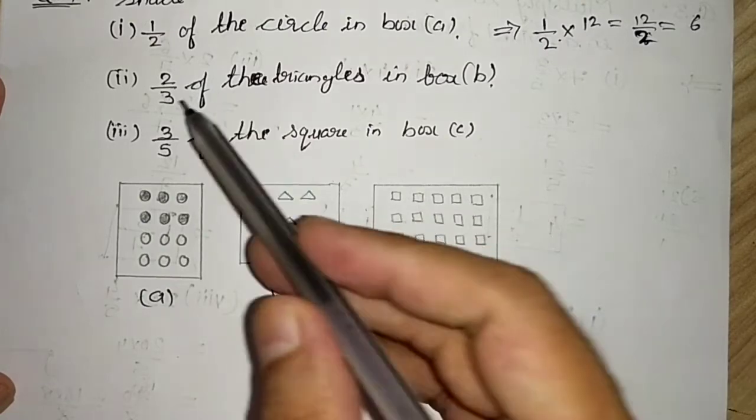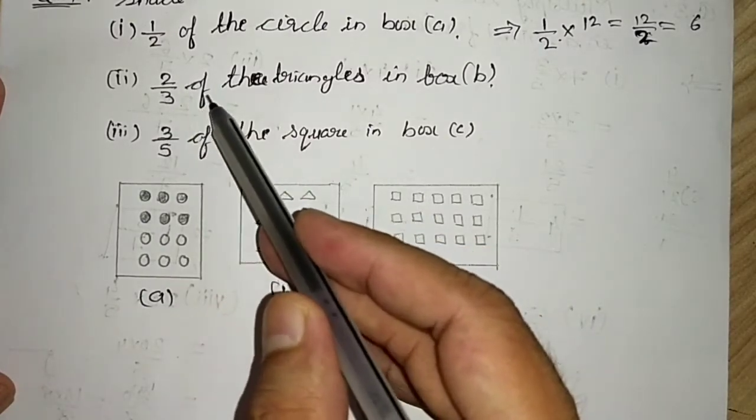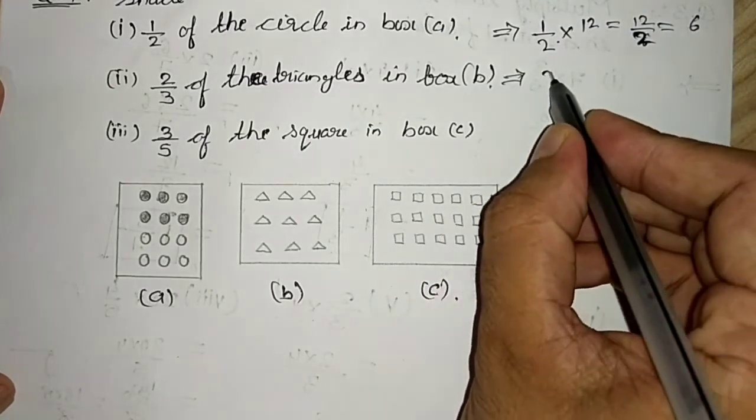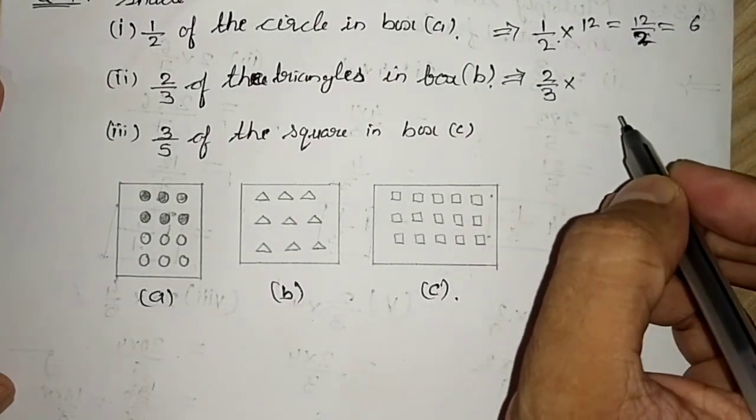Now moving to second part, 2 by 3 of the triangles in box B. So for box B, 2 by 3 of means multiplication.